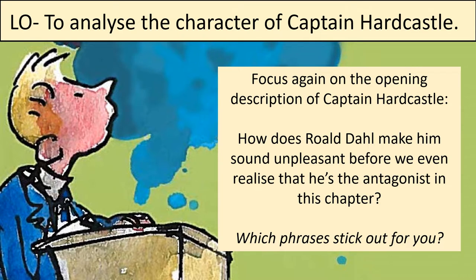You might know these terms from Harry Potter — Harry is the protagonist, as opposed to Voldemort who is the antagonist. Those of you who've seen the Hunger Games will know that Katniss Everdeen is the protagonist, whereas President Snow is the antagonist. If you think about the word 'antagonist,' you might use it to describe somebody who causes a lot of arguments — somebody who is antagonistic. It's really important you know those two words, protagonist and antagonist, as we'll be thinking about how we can tell from the very beginning of this chapter that Captain Hardcastle is the villain.